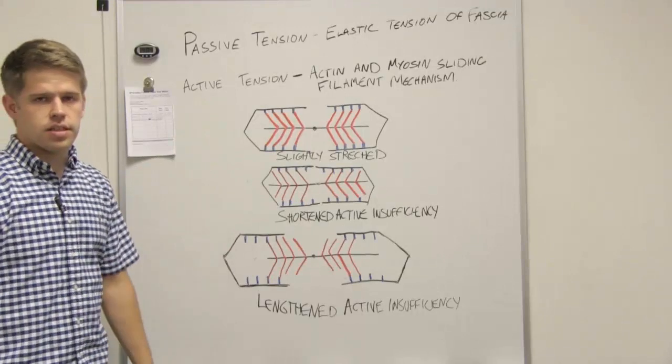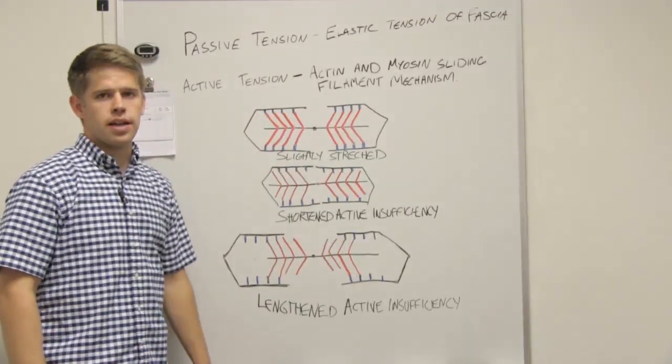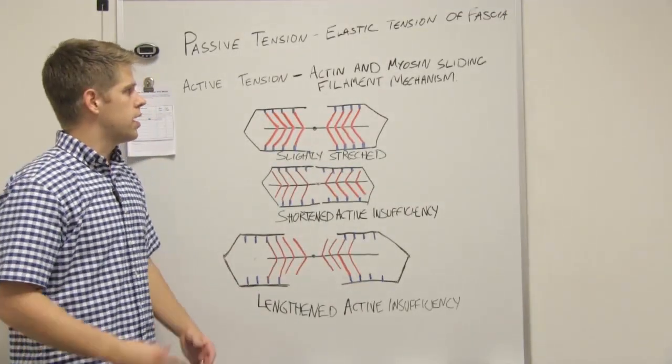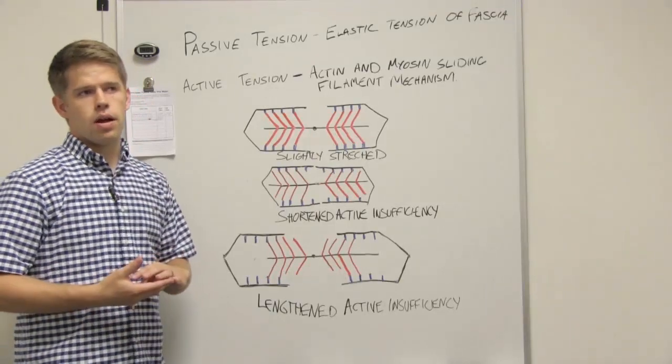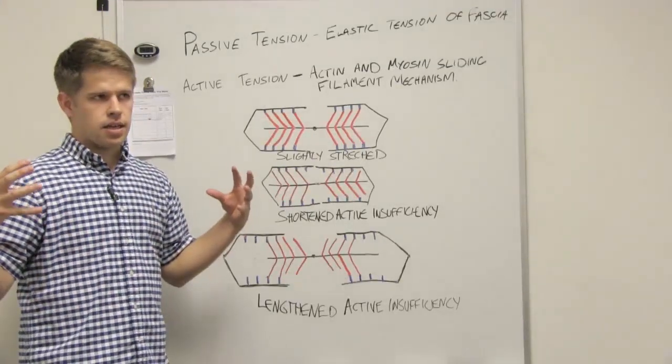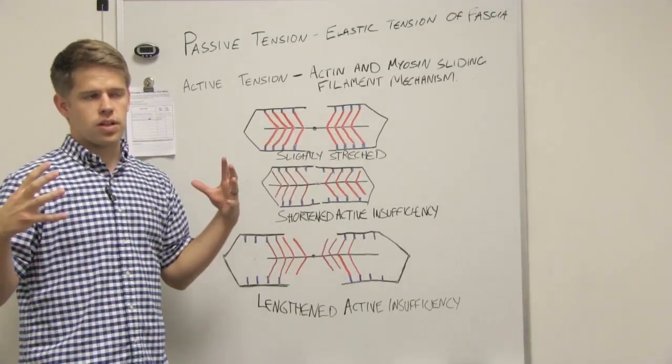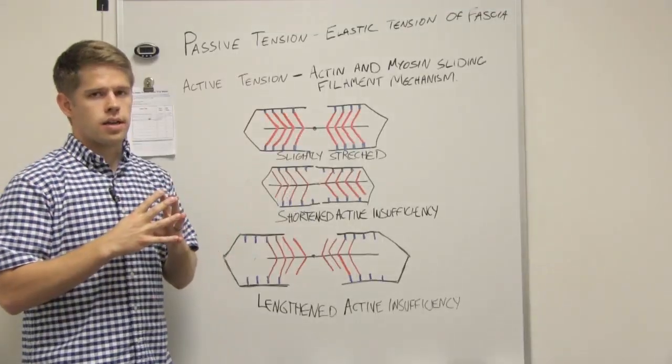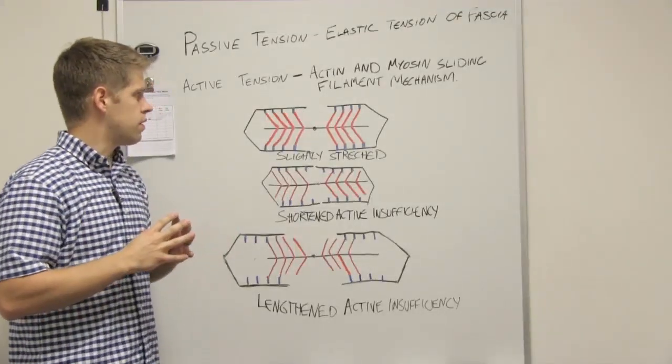And then active tension is the tension or the force that you might expect. It comes from actin and myosin, the myosin pulling on the actin through all the muscle fibers in the muscle, and overall it causes an overall contraction of the muscle.